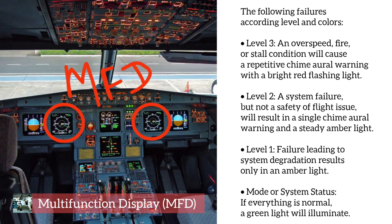The following failures according to level and colors. Level 3: An overspeed, fire, or stall condition will cause a repetitive chime oral warning with a bright red flashing light. Level 2: A system failure, but not a safety of flight issue, will result in a single chime oral warning and a steady amber light. Level 1: Failure leading to system degradation results only in an amber light. Mode or system status: if everything is normal, a green light will illuminate.